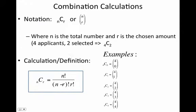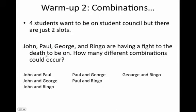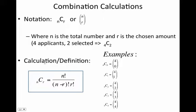Hopefully you wrote that example down. Now, combination calculations. We have a certain notation for situations where order does not matter: N choose R, also notated with interval brackets. N is the total number and R is the chosen amount. So if there were four applicants and two selected, it would be 4 choose 2. The calculation brings factorials back into play: N factorial over the quantity (N minus R) factorial times R factorial.